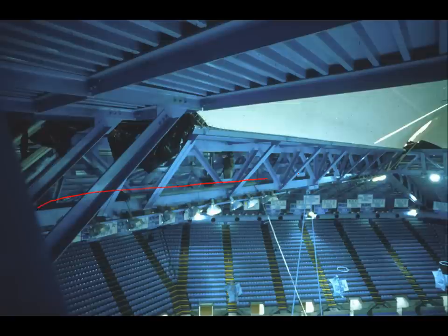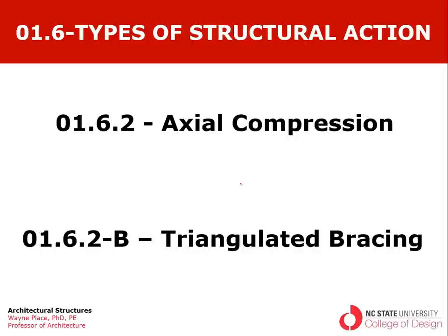These show some catwalks up above in the compression ring that goes around the boundary, and give you a sense of scale — there's a person standing inside there. That ends our discussion of axial compression and triangulated bracing as a way of reducing the overall effective length relative to buckling.